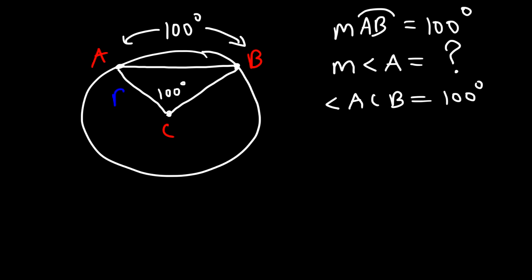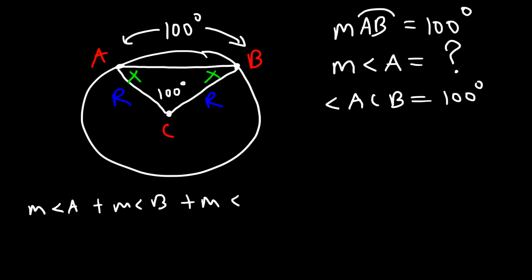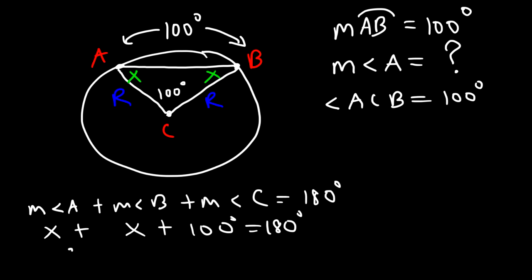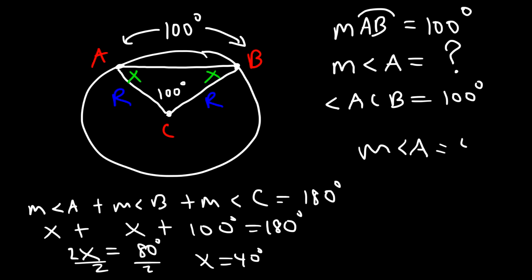AC and CB are both radii of the circle, so the triangle is isosceles. Since the two sides are congruent, the opposite angles must be congruent — so angle A equals angle B, both equal X. We get X plus X plus 100 equals 180, so 2X equals 80, and X equals 40. Therefore angle A and angle B are both 40 degrees.